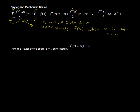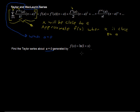Now if a equals 0, as we have in this example, that gives us the Maclaurin series. The Maclaurin series is just a special case of the Taylor series — specifically when a equals 0, or when you want to approximate a function when x is very close to 0.